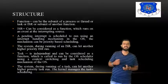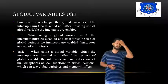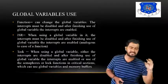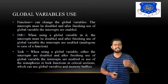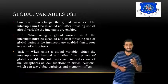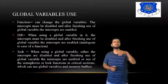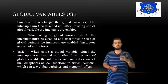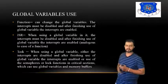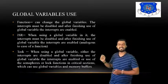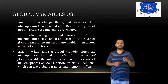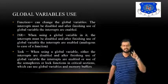Global variable use: there are two types of variables — local and global. A global variable is continuously operated, monitored, and executed once assigned. It is continuously assigned to every function, loop, task, or process. For a function changing a global variable, the interrupt must be disabled, and after finishing use of the global variable, the interrupt is re-enabled.